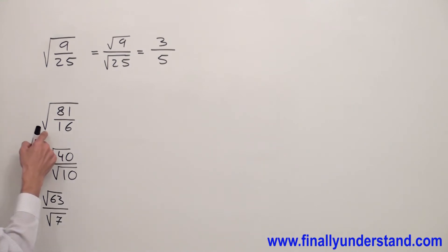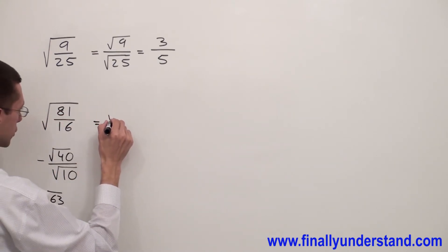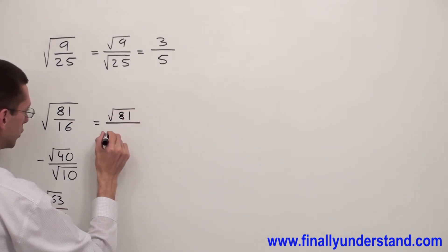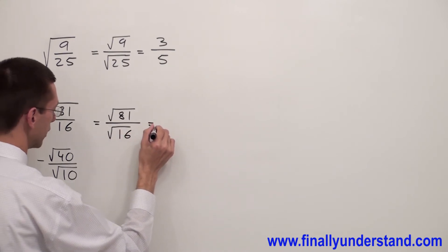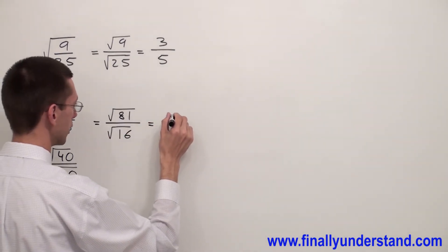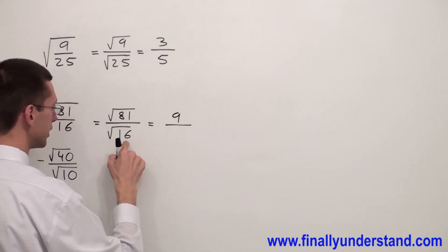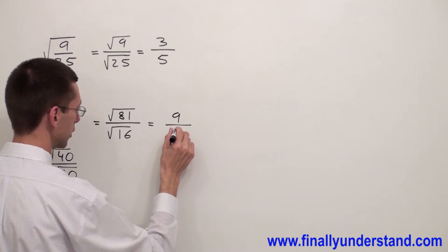Let's take a look at another example. Again, I'm going to use the properties of radicals. Square root of 81 over 16, I can rewrite as square root of 81 over square root of 16. Square root of 81 equals 9, and square root of 16 equals 4.